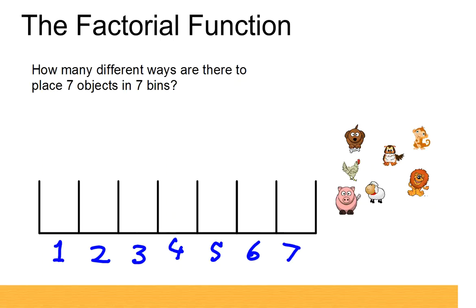Let's start in bin number one. In bin number one we have all of the possible choices—any one of these seven animals. Let's say we take this one. So we have the owl in the first bin, and the number of possibilities that we had was seven.